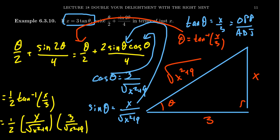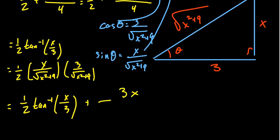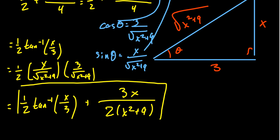Cosine was 3 over the square root of x squared plus 9. The square root of x squared plus 9 appears twice in the denominator, so multiplying them together gives x squared plus 9. Writing this one more time: we have one half arctangent of x over 3, plus 3x over 2 times (x squared plus 9). So with the substitution x equals 3 tangent of theta, theta over 2 plus sine of 2 theta over 4 is equivalent to one half arctangent of x over 3 plus 3x over 2(x squared plus 9).